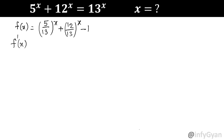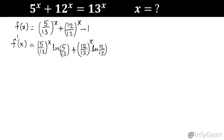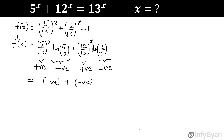Now f(x) = (5/13)^x + (12/13)^x − 1. I am going to find f'(x). The derivative of a^x is a^x · ln(a), so f'(x) = (5/13)^x · ln(5/13) + (12/13)^x · ln(12/13). The exponential terms are always positive, but the natural log of any number in between 0 and 1 is always negative. So you are adding two negative numbers, meaning f'(x) is negative — the function is monotonically decreasing.